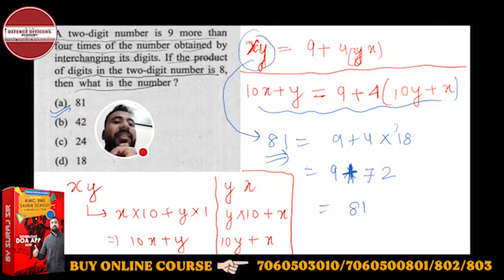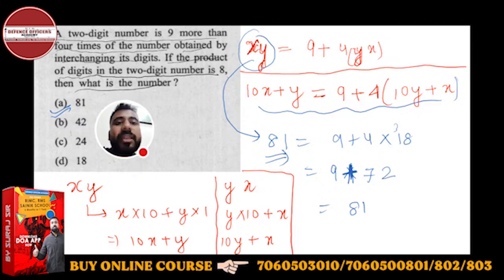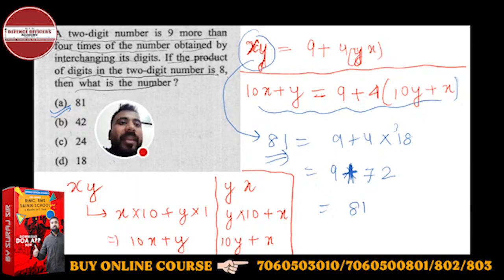We also have to check the second condition: the product of digits in the two-digit number is 8. For 81, the product of digits is 8 × 1 = 8 — yes, this is satisfied. For objective competitive exams you can directly check options. But for RIMC and Sainik School, since there are no options, you must use the equation approach. Understand that the two-digit number is 9 more than 4 times the number obtained by interchanging its digits.